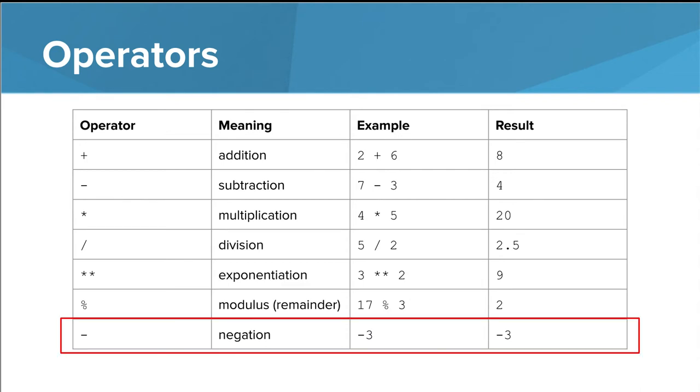Then, I want to give some special attention to the last operator because it is the only one that only applies to one number. The negation operator is different from the subtraction operator. It takes the negative of a number. So in this example, we use it with the number three and the result is just negative three.